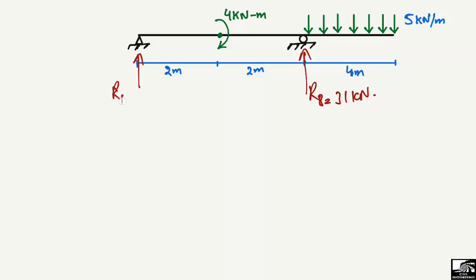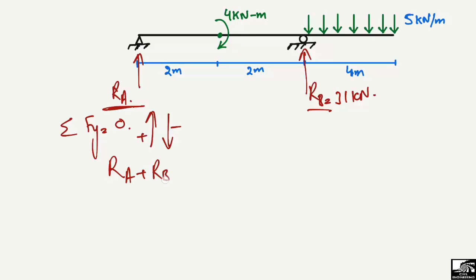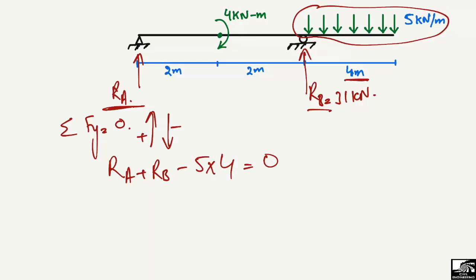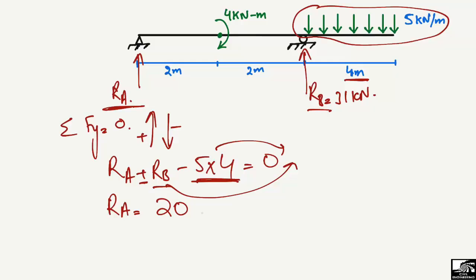Now that RB = 31 kN, we use the summation of vertical forces equal to zero to find RA. Upward forces are taken as positive and downward forces as negative. Upward forces are RA and RB; the downward force is the distributed load: 5 × 4 = 20 kN. So: RA + RB − 20 = 0, which gives RA = 20 − RB.